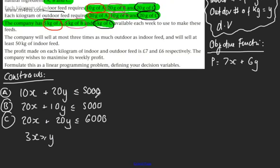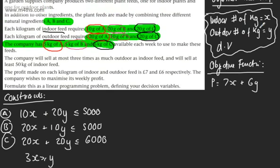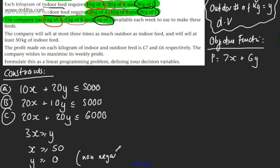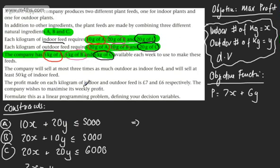We're told the company will sell at least 50 kilograms of indoor feed. We've called indoor feed x, so x must be greater or equal to 50. We're not given a minimum for y, but due to non-negativity, y will be greater or equal to 0. So let's gather our constraints.